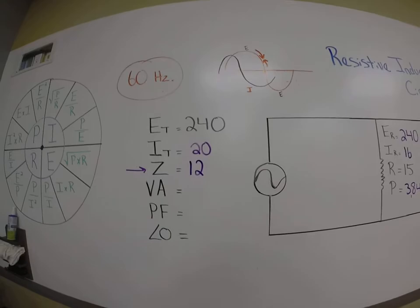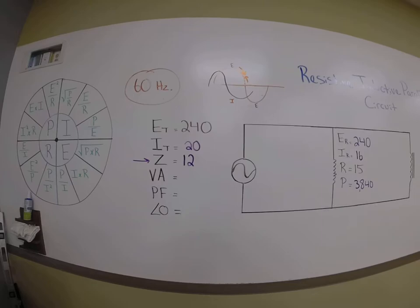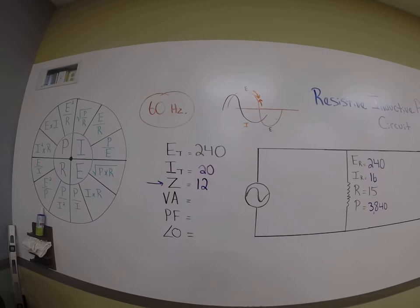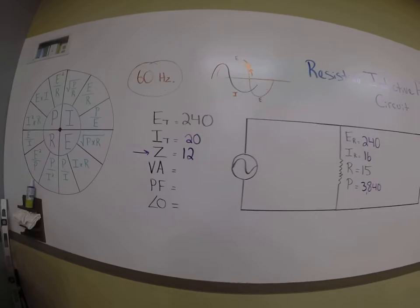Now, the last couple things are pretty easy. We remember how to solve these. VA, in this case, is going to be volts times amps, because that's synonymous with power. Volts times amps. Let's do 240 times 20. And we end up with 4,800 watts.